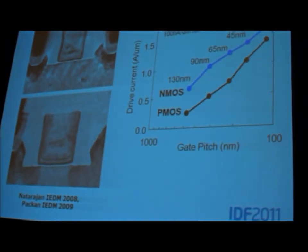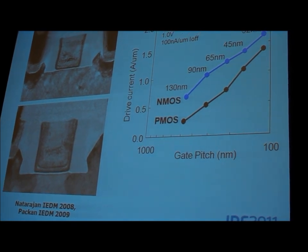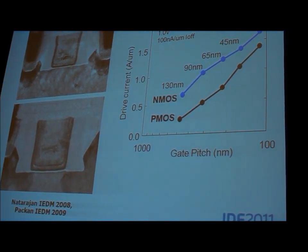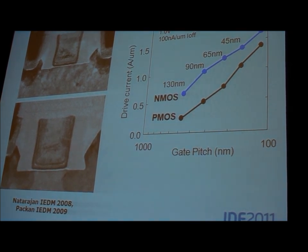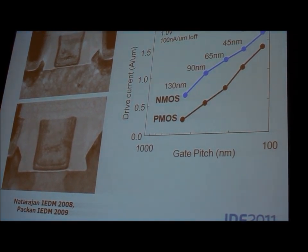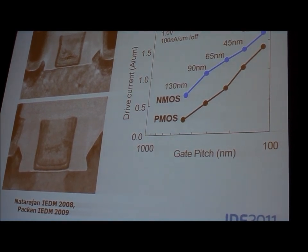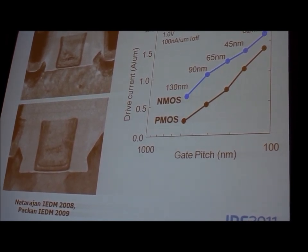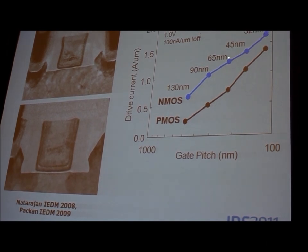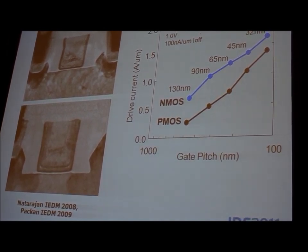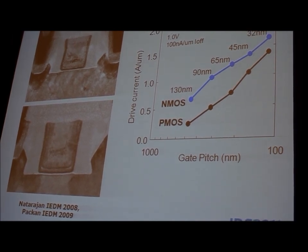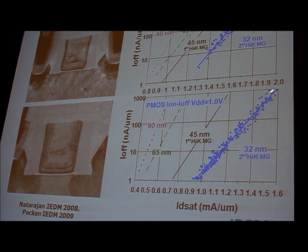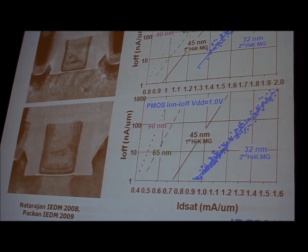At 32 nanometers, we really worked on pitch scaling. With the loss of classic Dennard scaling, as dimensions shrink you have more and more trouble fitting strain sources into very small source-drain regions. Maintaining improvement as you scale pitch becomes very difficult. The 32-nanometer node demonstrated continuing improvement in drive current even though pitch was declining — a very significant advancement.